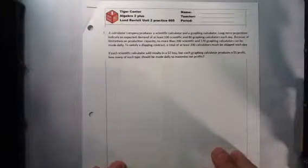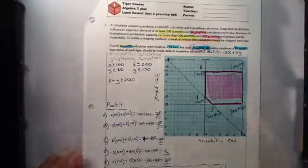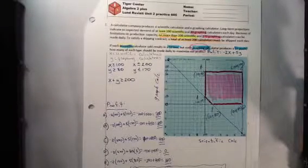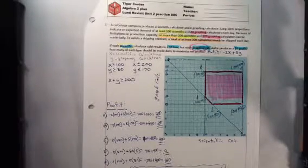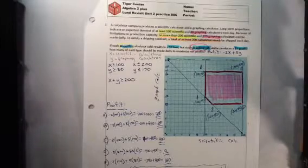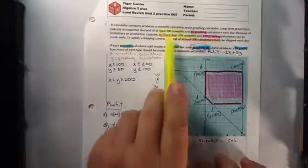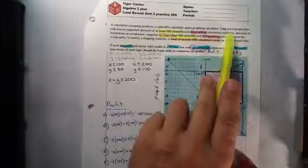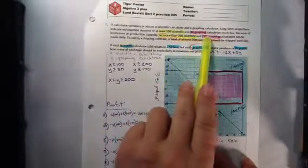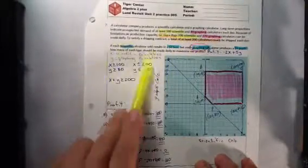Hopefully you've already tried this problem. Today we're going to go over the answer. The most important thing with these context problems is reading the actual context and highlighting the important points in order to write our systems of constraints.